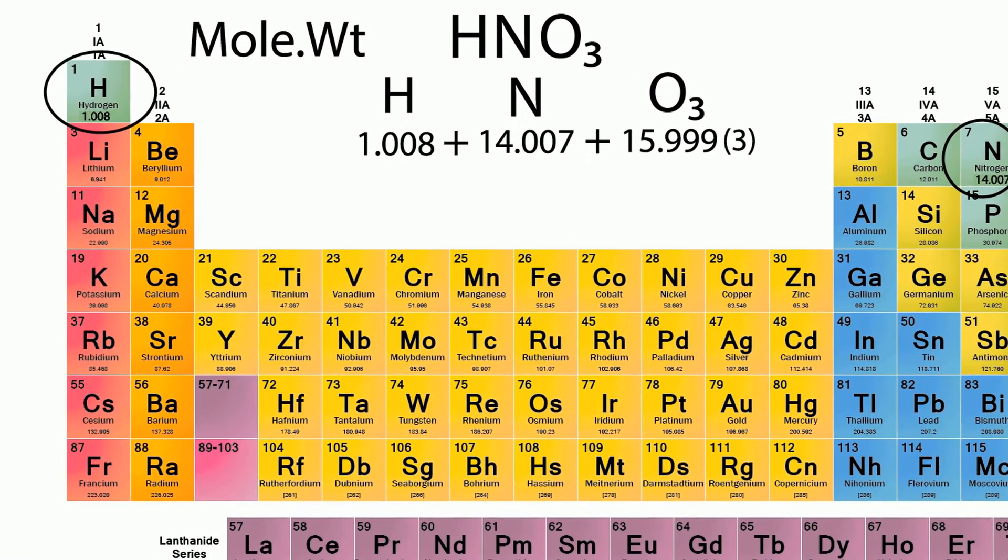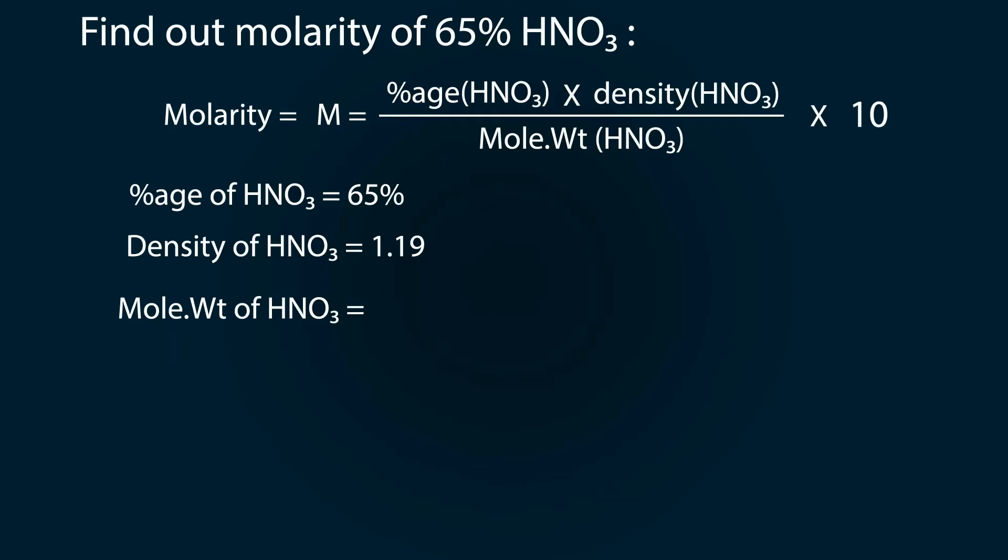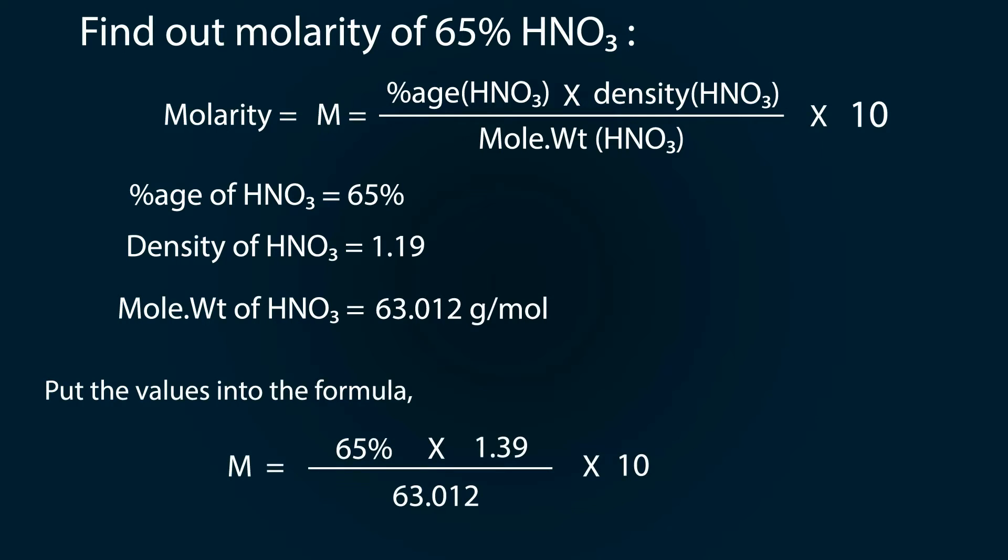So we get molecular weight of HNO₃ as 63.012 grams per mole. Let's put the values in the formula: 65 multiplied by 1.19 multiplied by 10, whole divided by 63.012, and we get 14.34.